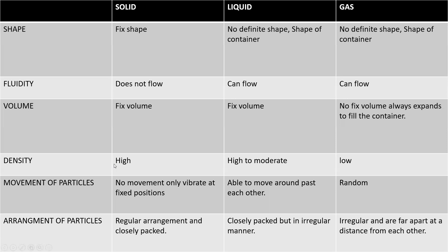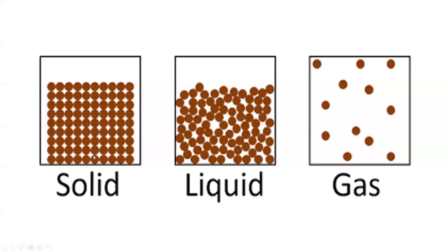Regarding density: solids have high density, liquids have moderate density, and gases have low density. For movement and arrangement: in solids, particles are in fixed positions and closely packed, so they cannot move freely — they just vibrate. In liquids, particles are close together but not in fixed positions; they can move. In gases, particles have an irregular arrangement, the distance between particles is very large, and their movement is random.